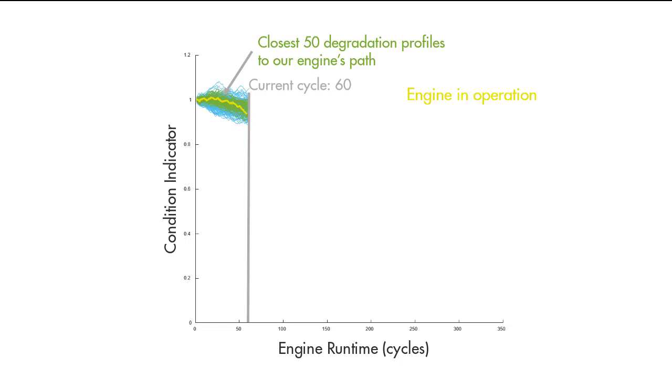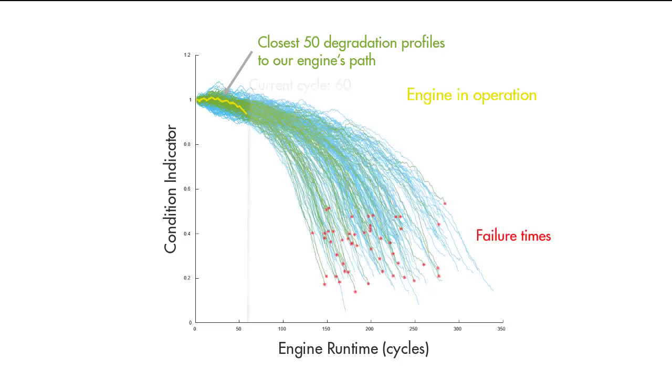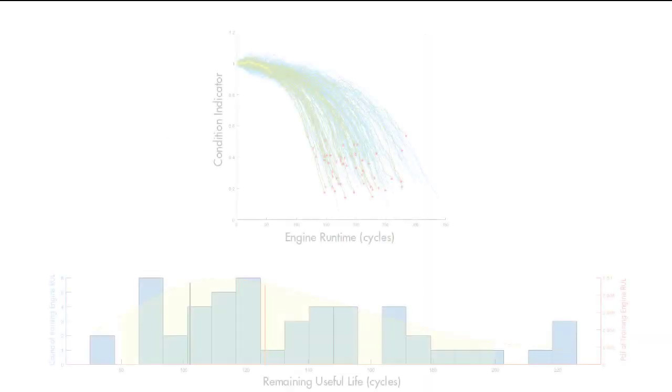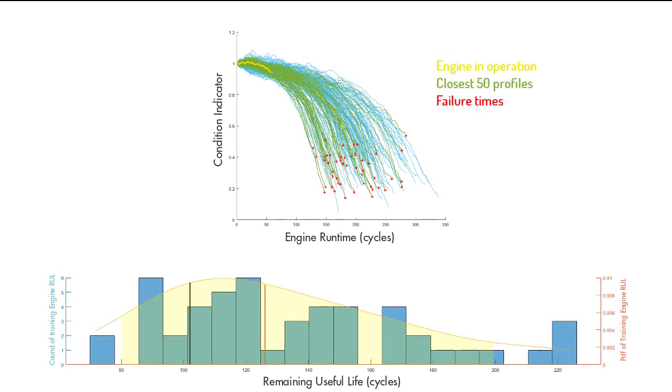Because we already know their failure times, we can use this data to fit a probability distribution as seen here. The median of this distribution gives us the remaining useful life estimate of our engine.